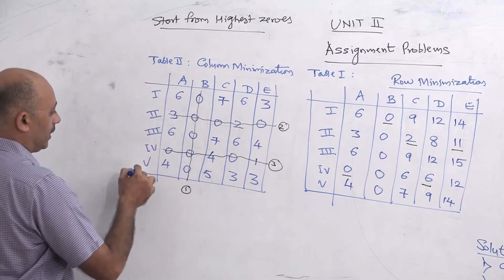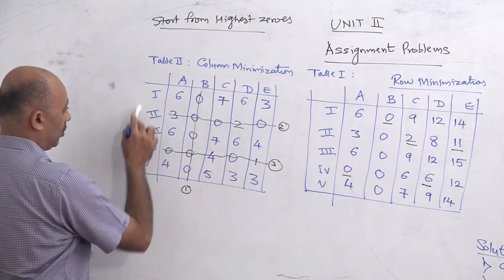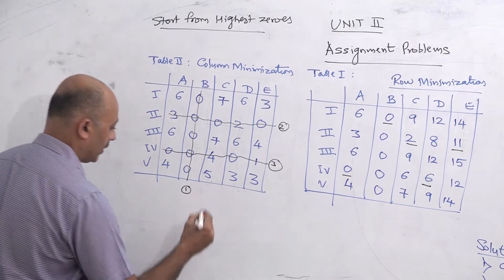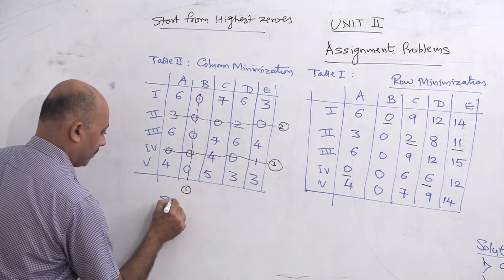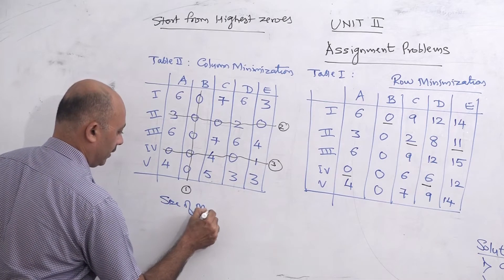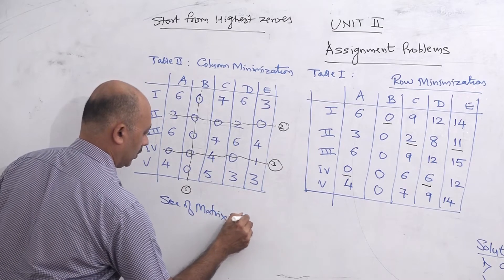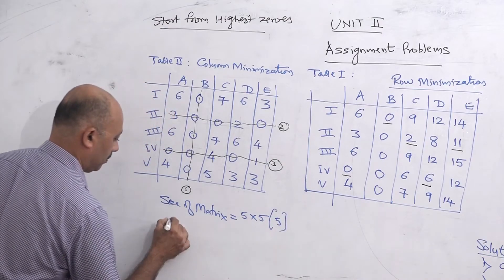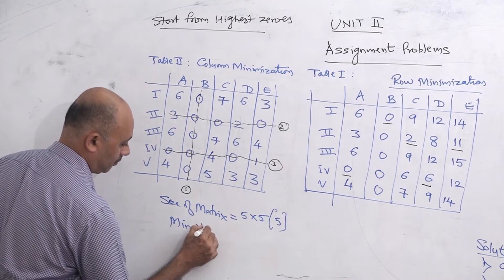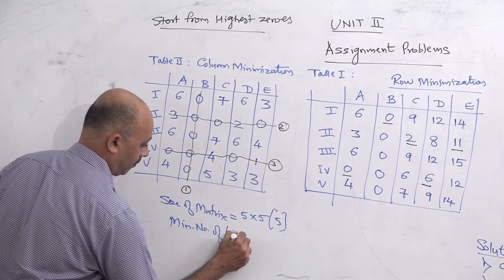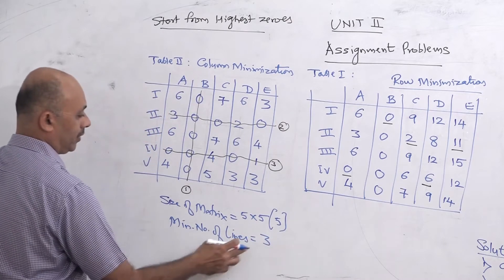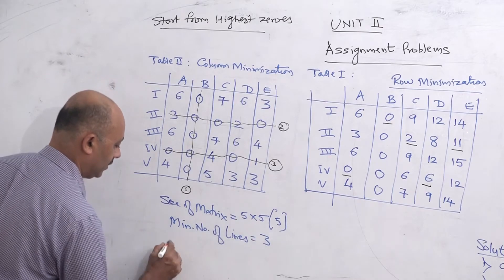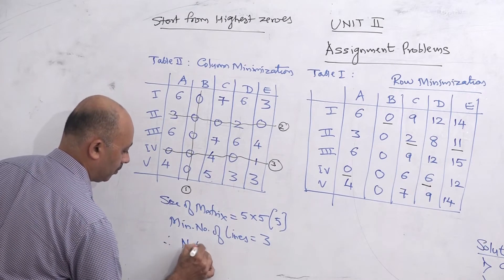The size of the matrix is 5×5, so we need 5 lines for an optimal solution. But the minimum number of lines we are getting is only 3. Since we are not getting 5 lines, the solution is not optimal. The solution becomes optimal only when we get 5 lines.